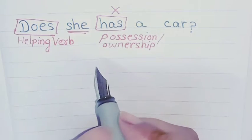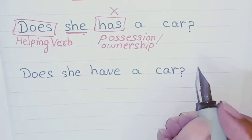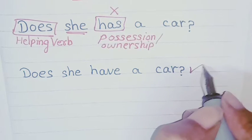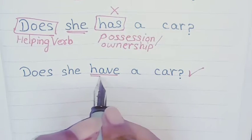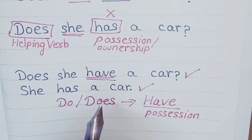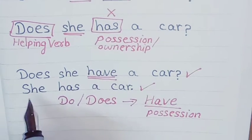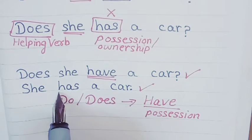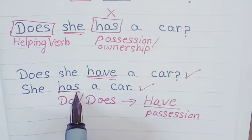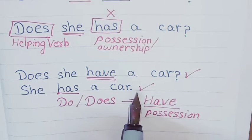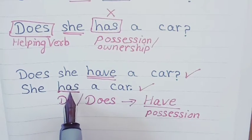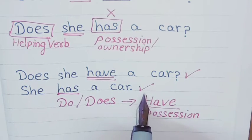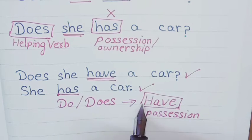The correction will be: Does she have a car? So it will be correct one. When you will use it in a positive sentence then you have to use has because over here has is a helping verb. Positive sentence mein use karhenge to has hi aega.